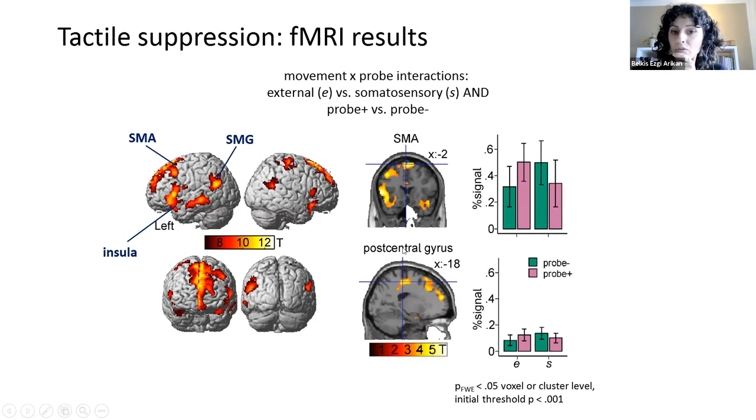So here are two examples, two regions of interest. So this is postcentral gyrus, S1 and the SMA. And you see that it's modulated by whether a probe was presented. And in the somatosensory condition, we see lower activation in these areas.